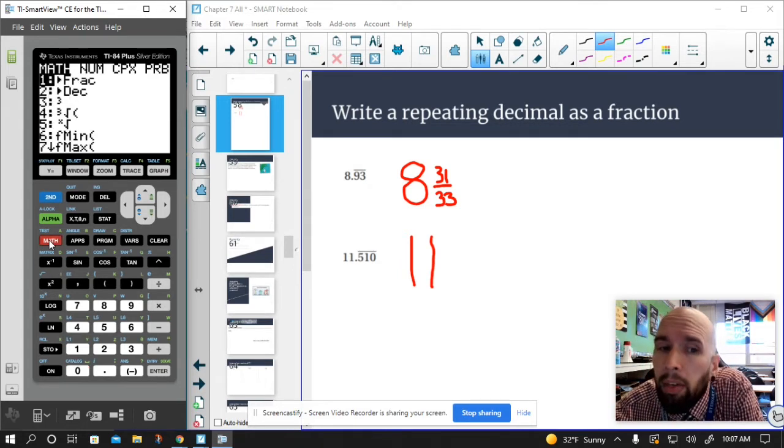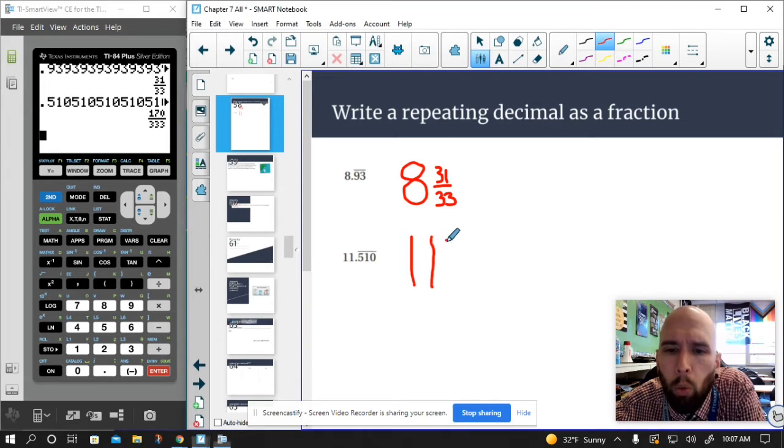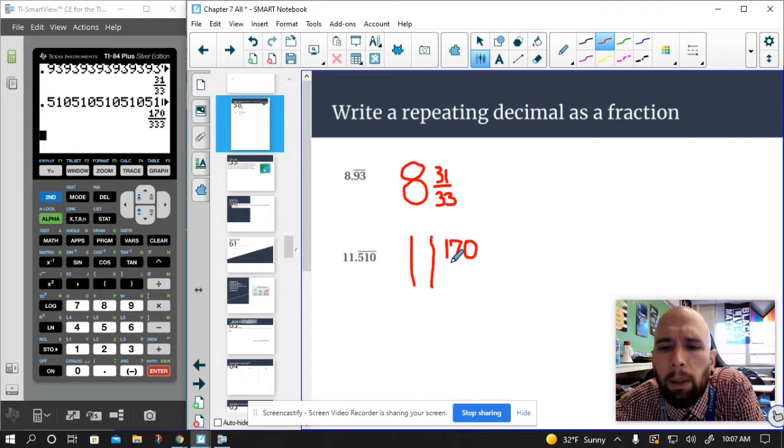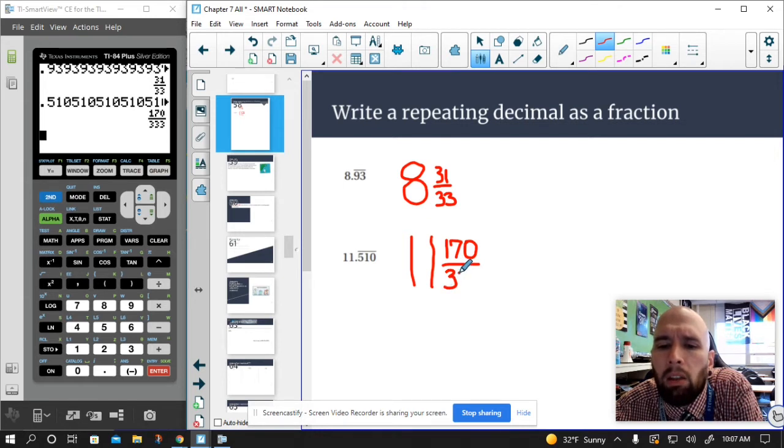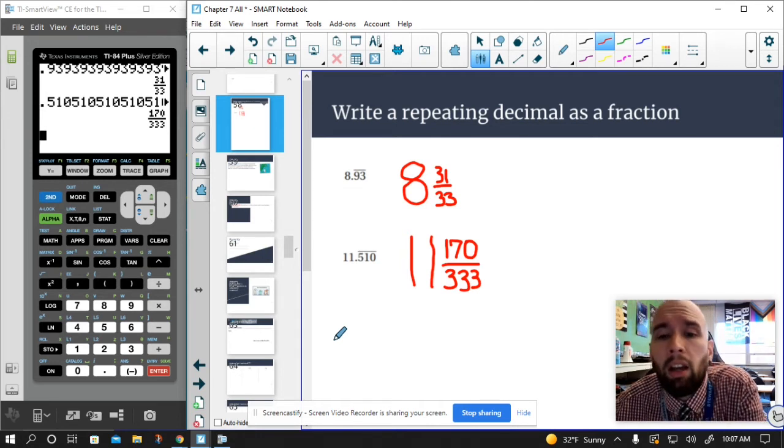You hit math, you hit frac, and there you have it. So 170 over 333. And again, I'm showing you this because what this does is this automatically simplifies it for you. Normally, we would put 510 over 999. And then it simplifies to that after you divide everything by 3. But this kind of cuts out the middleman.